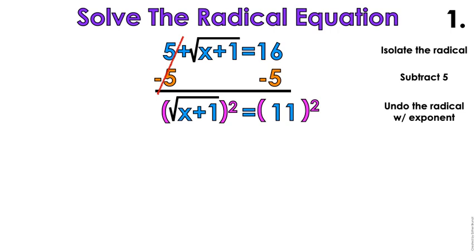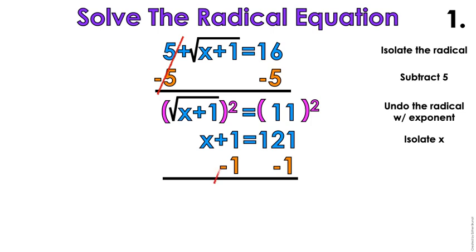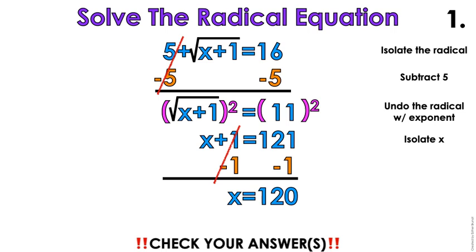So when I undo the radical with an exponent of 2, I'm left with x plus 1 because I undid the radical. I inversed it. And then on the other side, because if you do to one side, you got to do to the other side, 11 squared is 121. So then it's a regular equation. x plus 1 equals 121. Subtract 1 from both sides. x equals 120. Make sure you check your answers! It's imperative that you check your answers for radical equations.